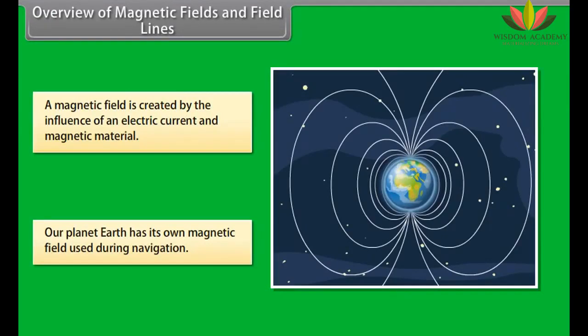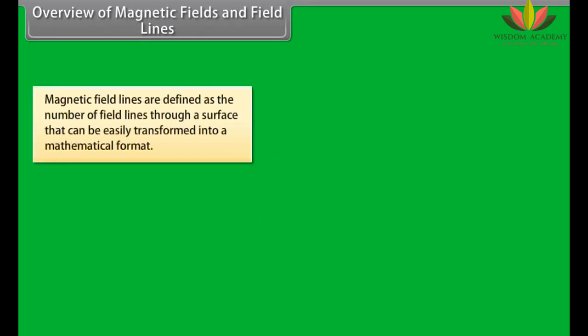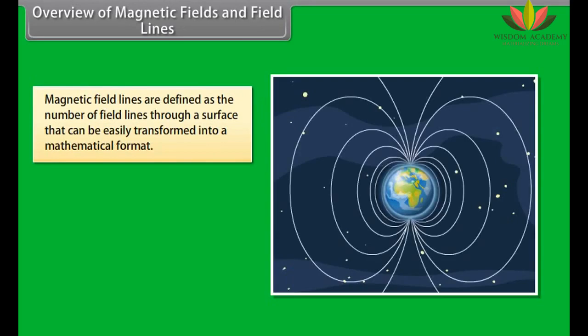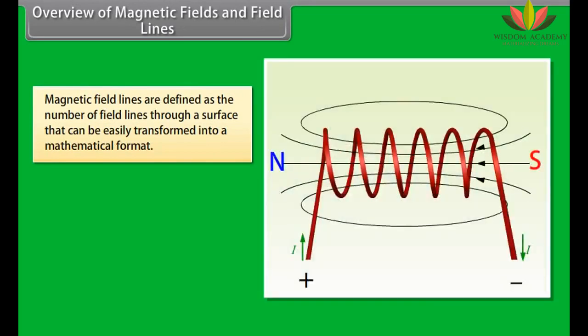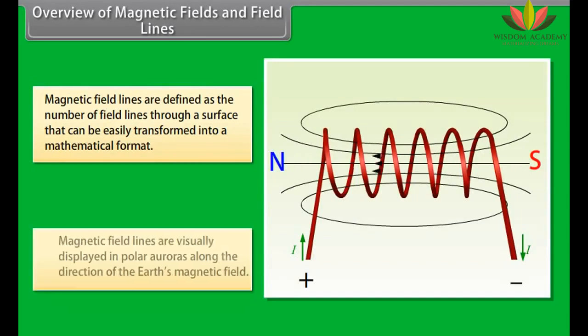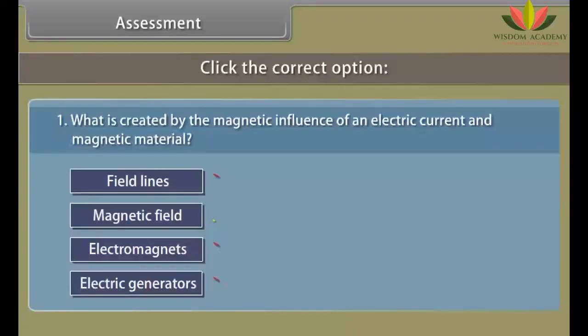Magnetic fields are also used in electric devices, such as transformers. Magnetic field lines can be compared to the constant altitude lines that are visible on a map. Magnetic field lines help in stating simple concepts of magnetism easily. These are defined as the number of field lines through a surface and can be easily transformed into a mathematical format. Magnetic field lines are visually displayed in polar auroras where visible streaks of lines are created along the direction of Earth's magnetic field.